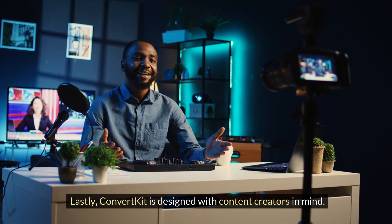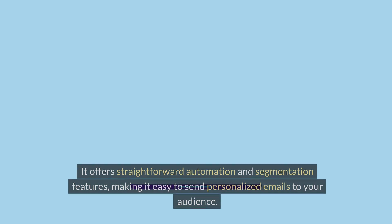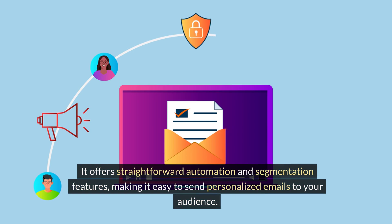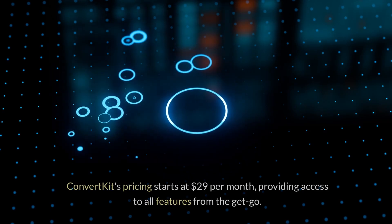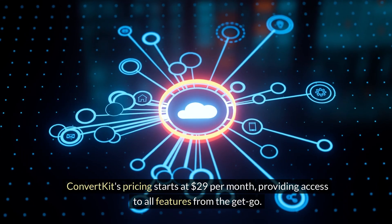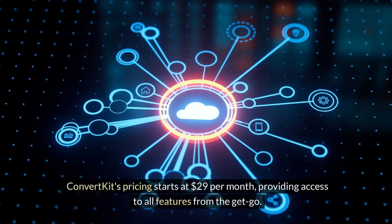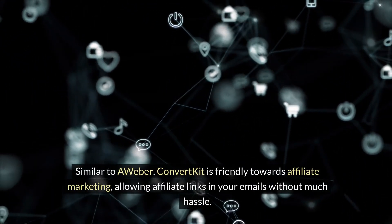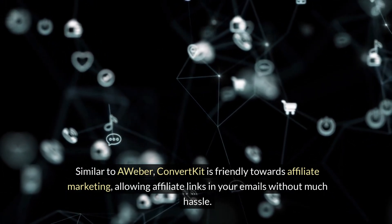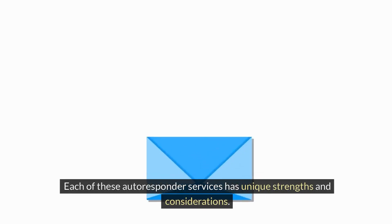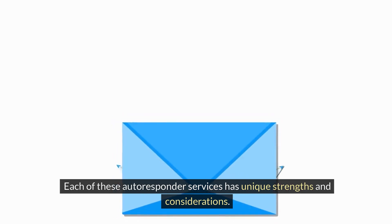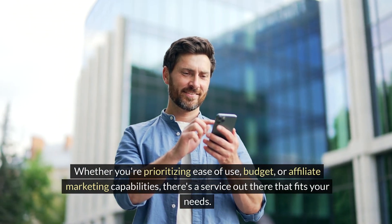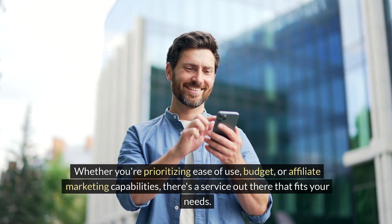Lastly, ConvertKit is designed with content creators in mind. It offers straightforward automation and segmentation features, making it easy to send personalized emails to your audience. ConvertKit's pricing starts at $1.29 per month, providing access to all features from the get-go. Similar to AWeber, ConvertKit is friendly towards affiliate marketing, allowing affiliate links in your emails without much hassle. Each of these autoresponder services has unique strengths and considerations, whether you're prioritizing ease of use, budget, or affiliate marketing capabilities — there's a service that fits your needs.